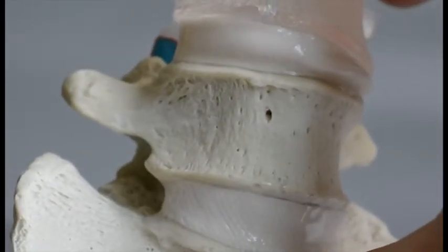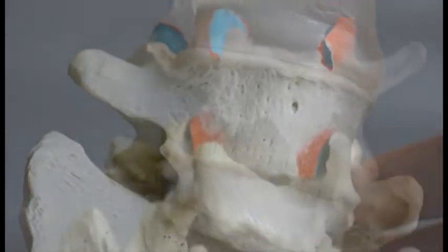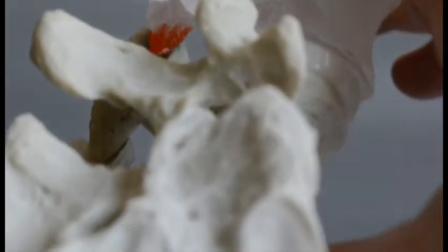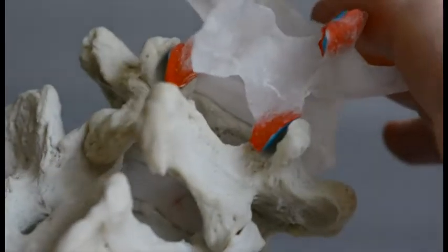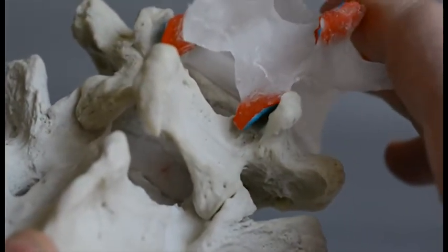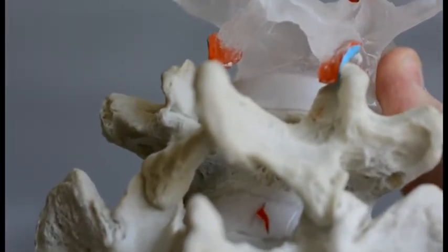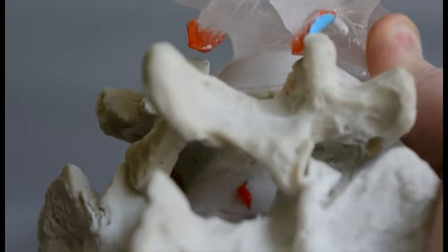At the inferior level L5-S1, it has been designed with our typical LXH stiffened annulus and nucleus. You can see how easily it is to demonstrate the approximation of the facets and hypermobility associated with the anterior intervertebral disc.